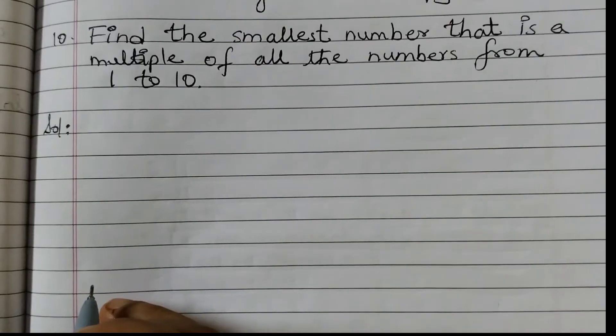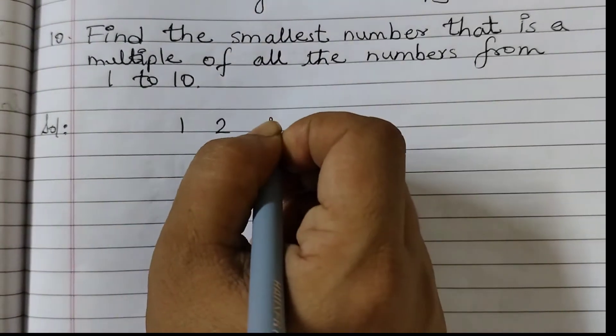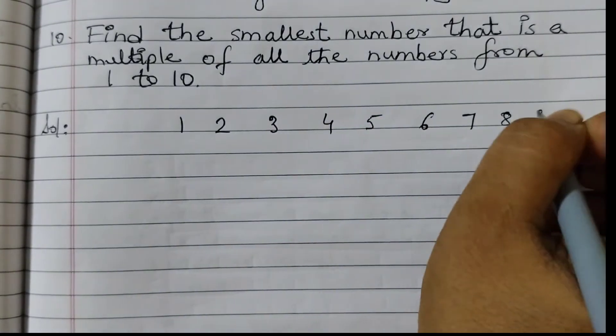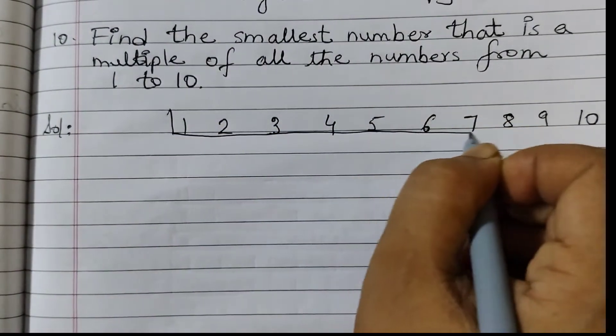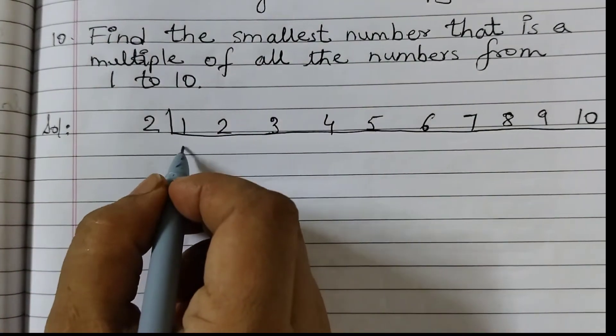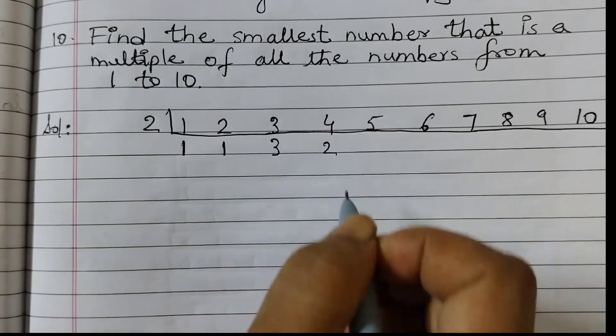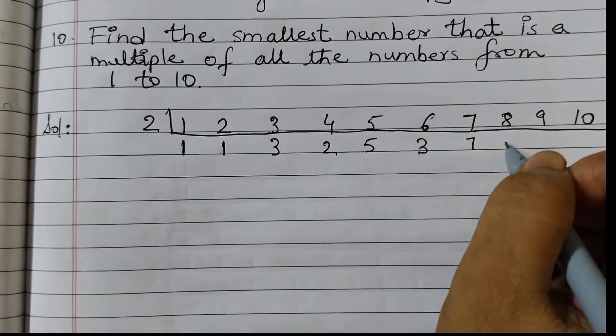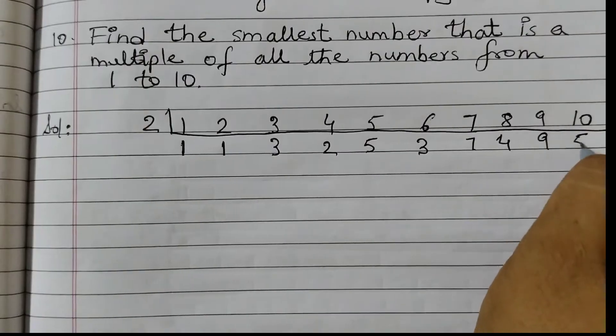Let's start doing it. So first write all the numbers in a row. 1, 2, 3, 4, 5, 6, 7, 8, 9, 10. We will start by dividing by 2. 2, 1 is not a multiple so 1 comes down as it is, 2 1's are 2, 3, 2 2's are 4, 5 is not a multiple, 2 3's are 6, 7 is not a multiple, 2 4's are 8, 9, 2 5's are 10.